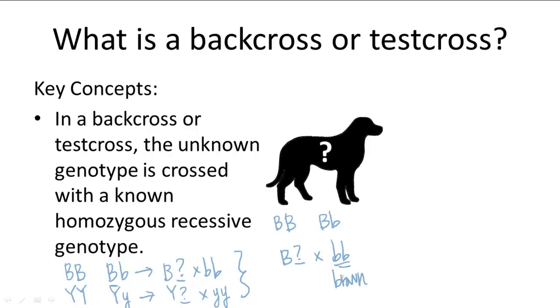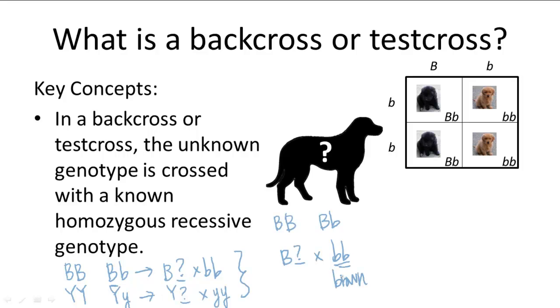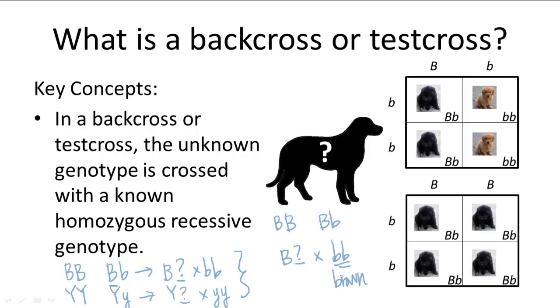So the reason why this works is if the dog is heterozygous, there's a 50% chance that the offspring will have either black or brown fur. And if the dog is homozygous, all the offspring will have black fur.